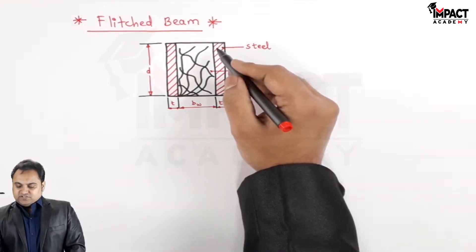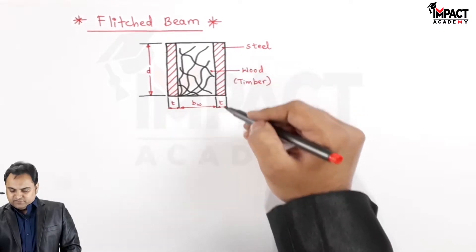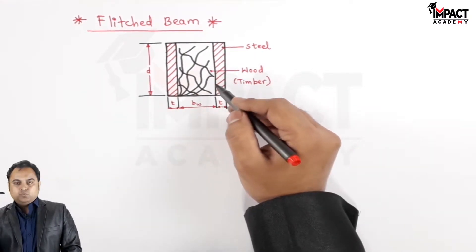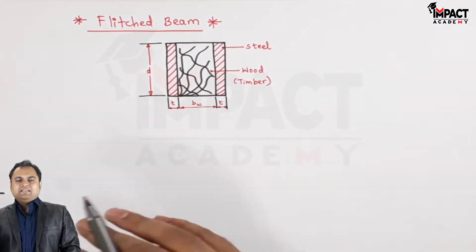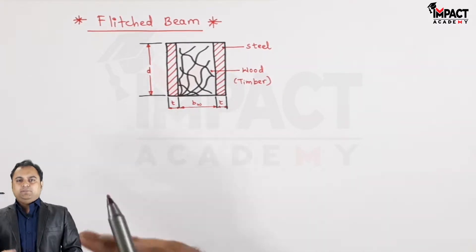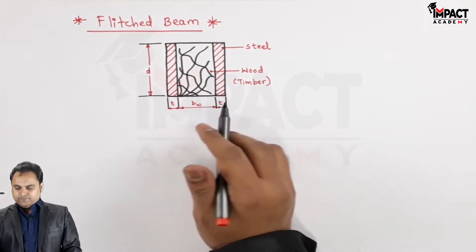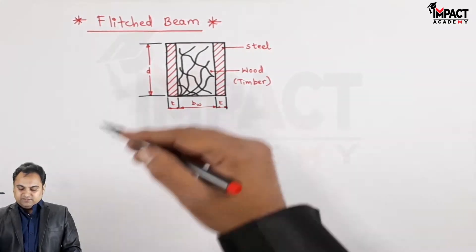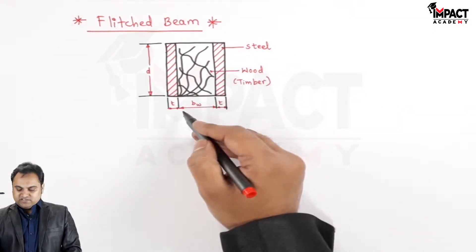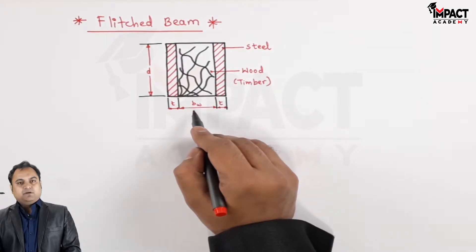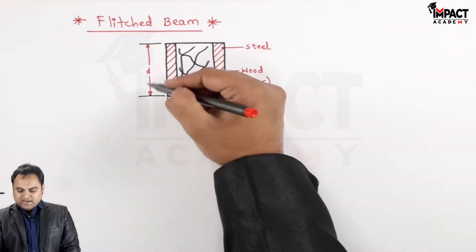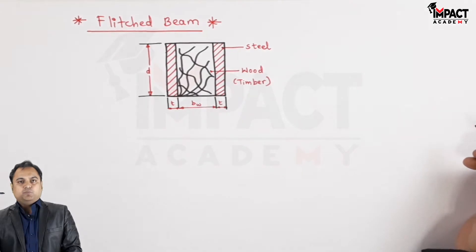So in the red sectioning which I have shown that is steel and in between there is wood. It means the wood has been strengthened with two steel plates on both sides, towards the right and left. Steel is having thickness t and depth d. Wood is having its width as b_w, the width of wood, and the depth is the same, that is small d.